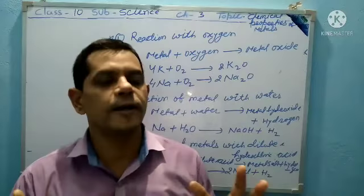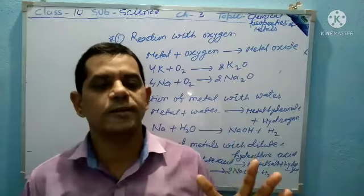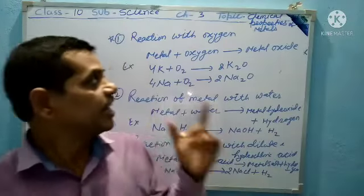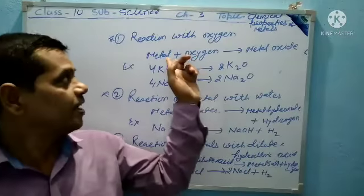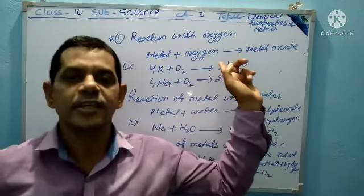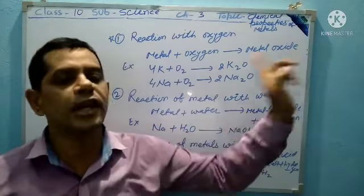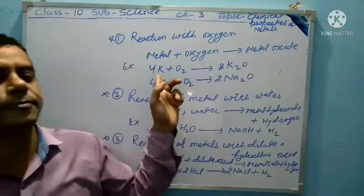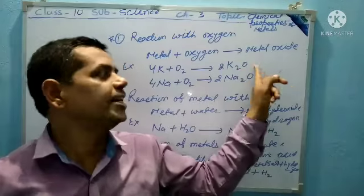Most metals form their respective metal oxide when reacting with oxygen. That is, metal plus oxygen produces metal oxide. For example, potassium with oxygen produces potassium oxide.